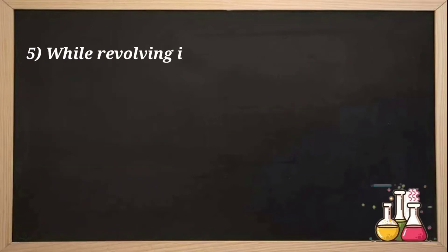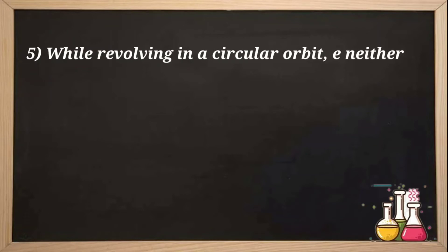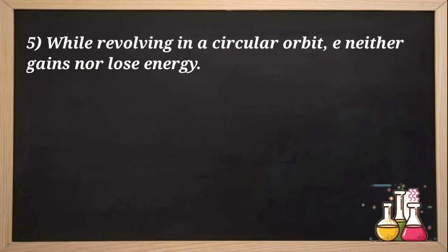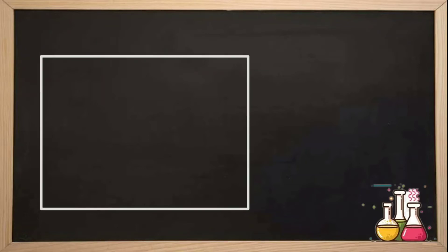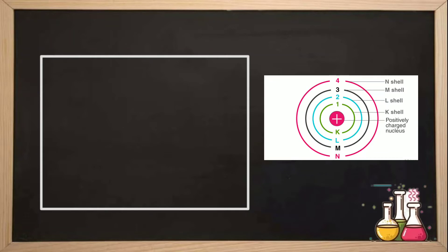This postulate is very important, and it saved the Bohr model from the failures of Rutherford's model. This postulate says: while revolving in a particular orbit, the electron neither gains nor loses energy. It means that when the electron is running in circular motion, it will never lose or gain energy. He introduced the concept that the energy of each orbit or shell is fixed.